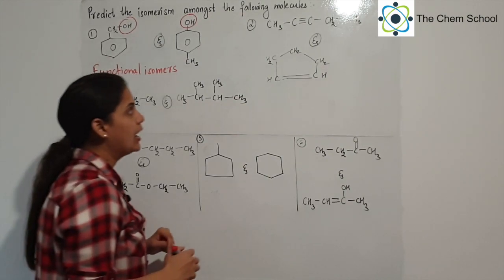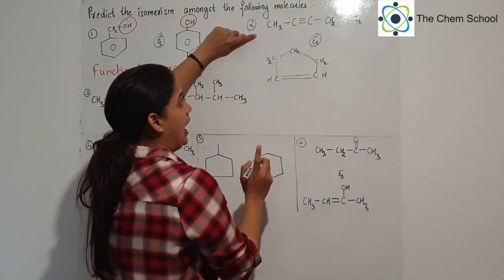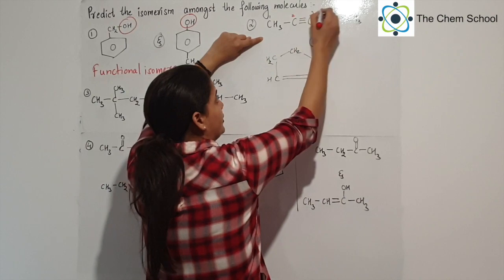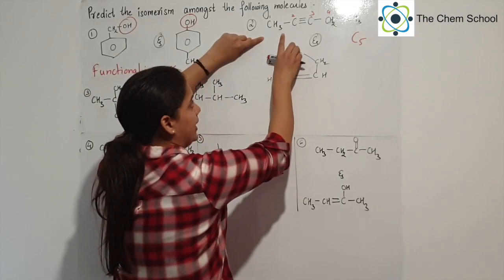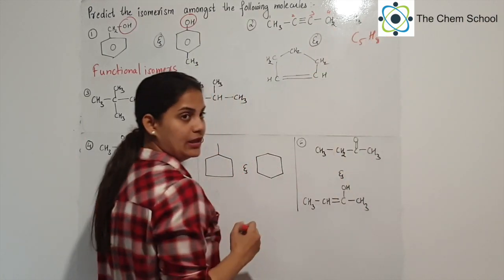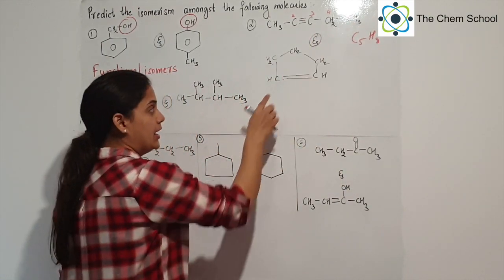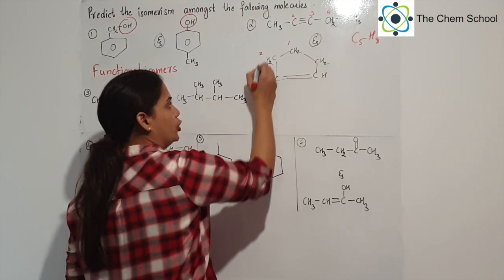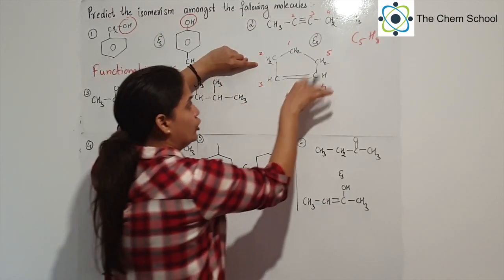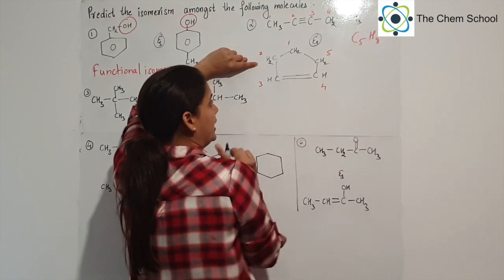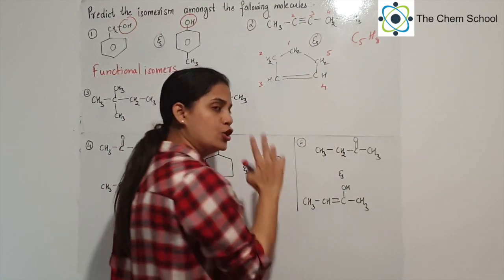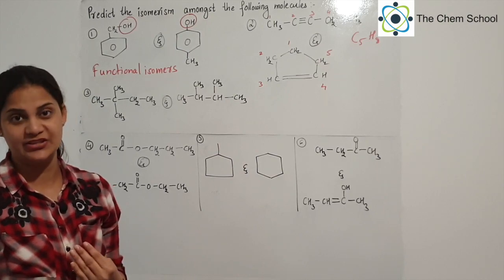Have a look at the second one. You have a molecular formula — what is your formula? You have carbon: 1, 2, 3, 4, and 5. Hydrogen: 3, 3, 4, 5, and 3 — that is 8. And this is a straight chain molecule. The second one also has 1, 2, 3, 4, and 5 carbons — total 5 carbons. Hydrogen count: 2, 3, 4, 5, 6, 7, 8. So if you have seen the molecular formula, it is the same — C5H8. One is a straight chain and the other is cyclic.